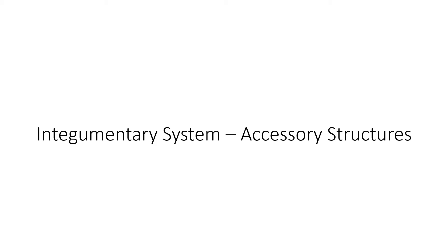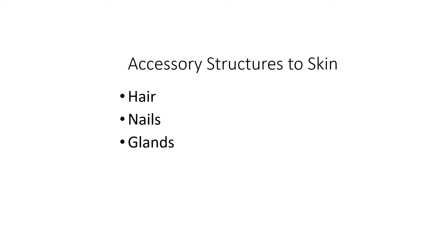Hey everybody, we're going to pick up with integumentary system accessory structures. If you're following me in the course pack, this information begins on page 57. There are three accessory structures to skin that we're going to talk about in this PowerPoint: hair, nails, and glands.